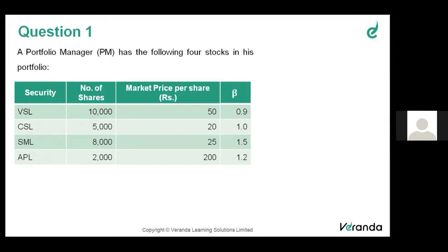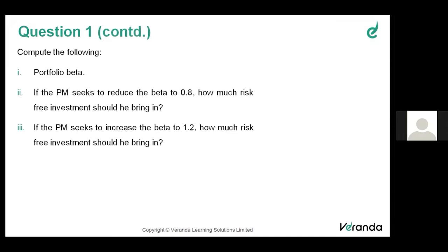A portfolio manager has the following four stocks: VSL - 10,000 shares, market price 50, beta 0.9; CSL - 5,000 shares, market price 20, beta 1; SML - 8,000 shares, market price 25, beta 1.5; APL - 2,000 shares, market price 200, beta 1.2. Compute the portfolio beta.